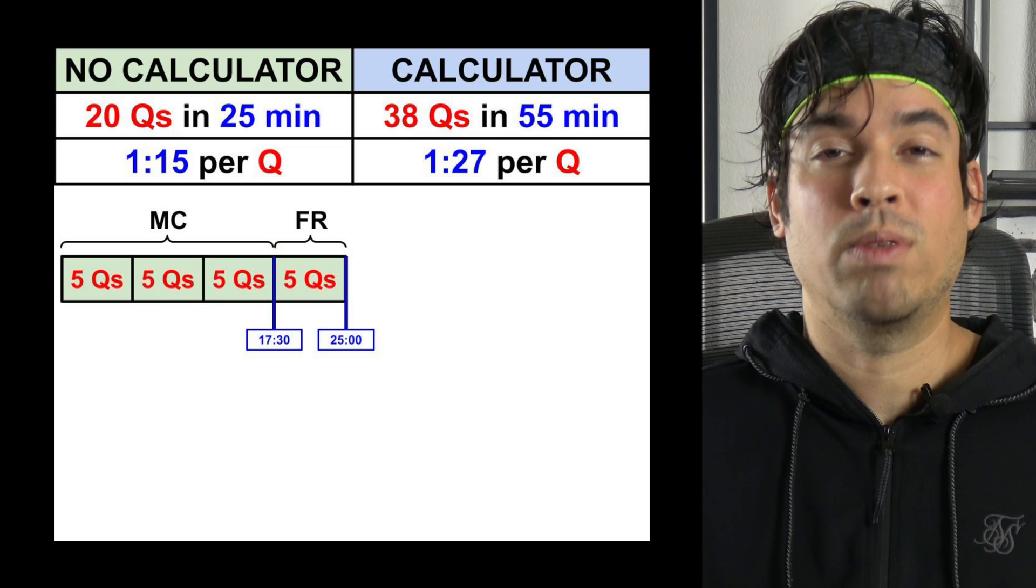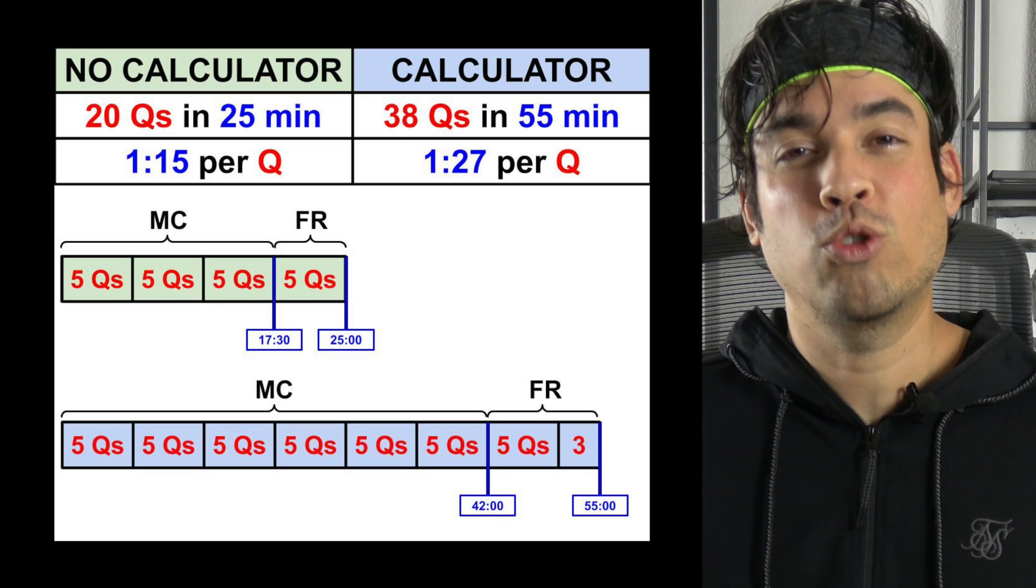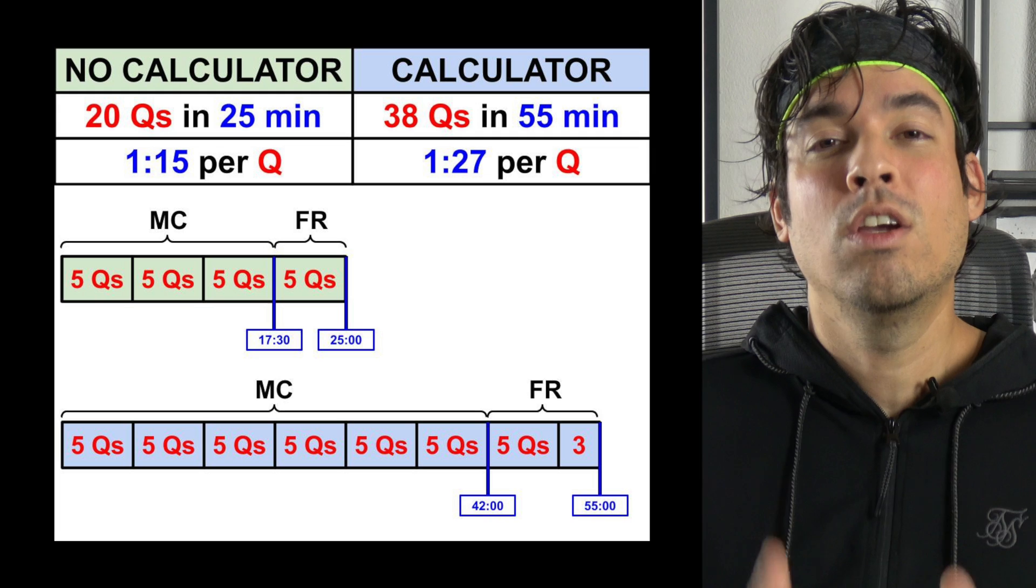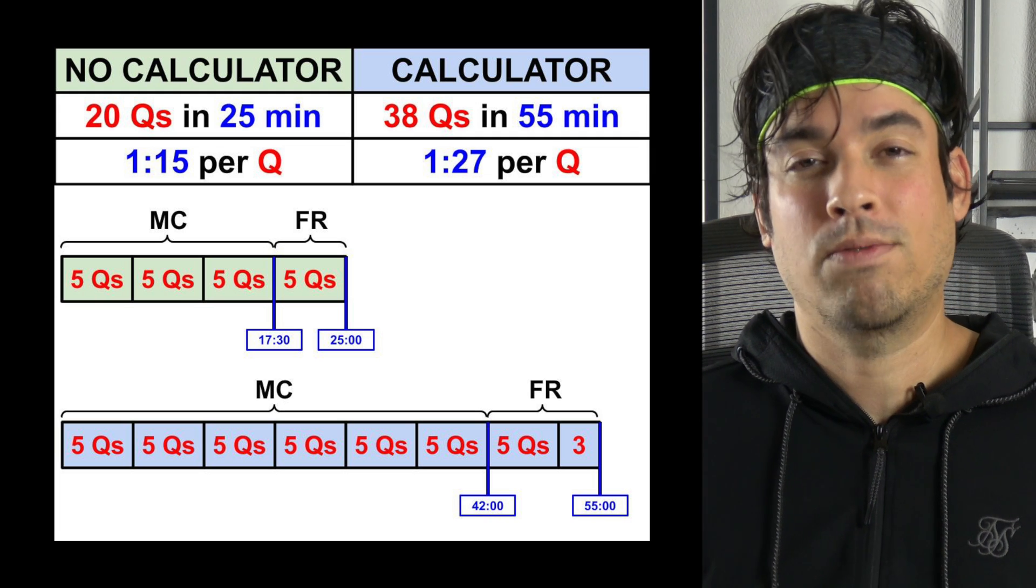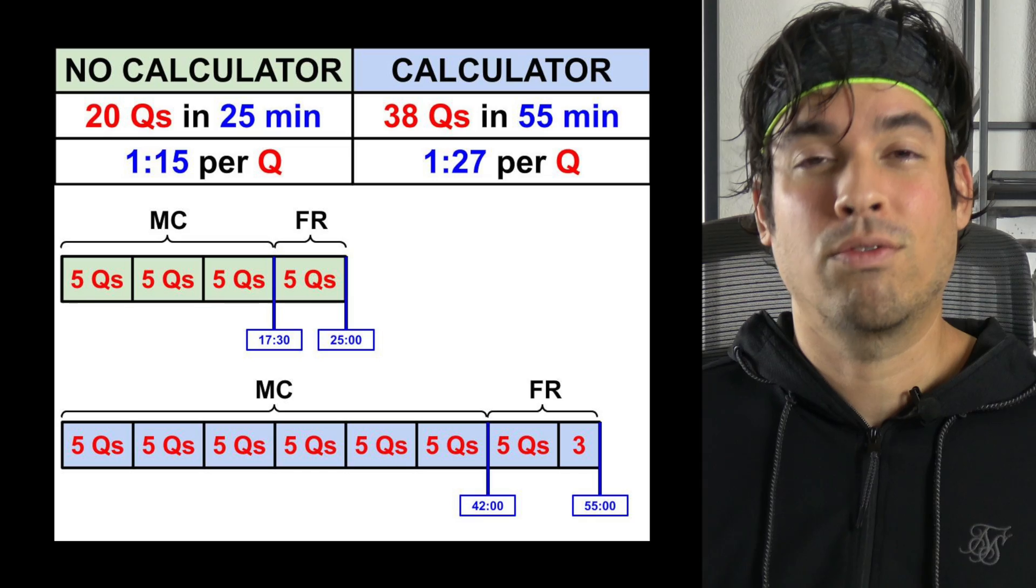On the calculator section the multiple choice ends at 30 questions, so we're going to target 42 minutes for that point. This will give you a solid 13 minutes on the free response section.